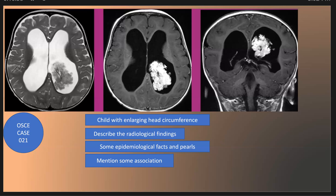The diagnosis is most likely choroid plexus papilloma in this child. As we said, the patient has increasing head circumference. What are some of the epidemiological facts for choroid plexus papilloma?